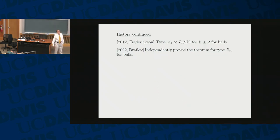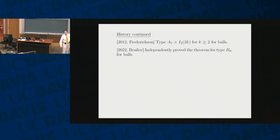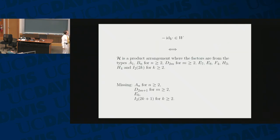Quick history continued. For balls, this was considered by Fredriksson in the type A1 cross the dihedral arrangement. And more recently, Brilov proved it with type Bn. So, this condition that the negative of the identity map is in the Coxeter group — what does it mean?